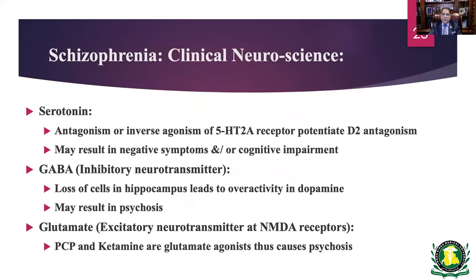Other theories include serotonin involvement due to the affective component of schizophrenia. If inhibitory neurotransmitters such as GABA are lost in the hippocampus, there is unopposed overactivity of dopamine, causing positive symptoms and psychosis. Similarly, glutamate is excitatory — substances like PCP, ketamine, or LSD can mimic agonist effects on those centers, causing psychosis by producing overactivity of dopamine.